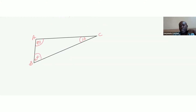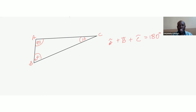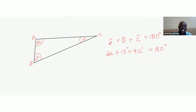Let's try another example. The idea remains that we're mixing some algebra with the geometry, but the concept is still that angle A plus angle B plus angle C, when we add all those interior angles, the total is 180 degrees. So 2x degrees plus 15 degrees plus 92 degrees should add to give 180 degrees.